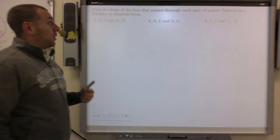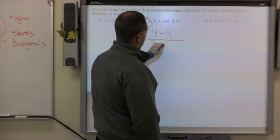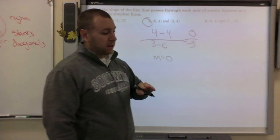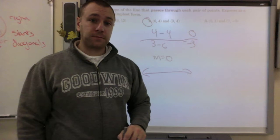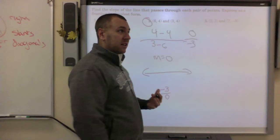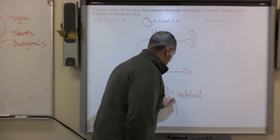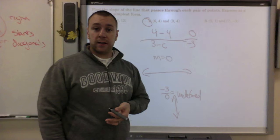For the second example: 4 minus 4 over 3 minus 6 gives zero over negative 3, so the slope is zero. Any time you have a slope of zero, think of a flat floor — that's a horizontal line. The reverse is when you get something like negative 3 over zero: that's undefined. Think of it as a cliff, a straight drop. Those are the two special cases for slope.